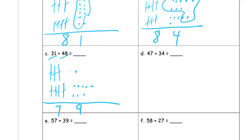So here's 47 plus 34. I need four tens — one, two, three, four — and seven ones: one, two, three, four, five, six, seven. And my 34, I need one, two, three tens and one, two, three, four ones.